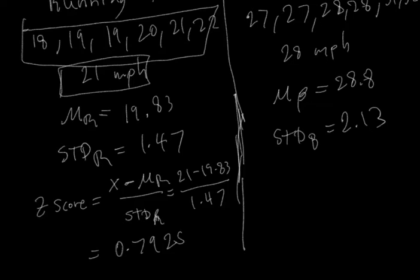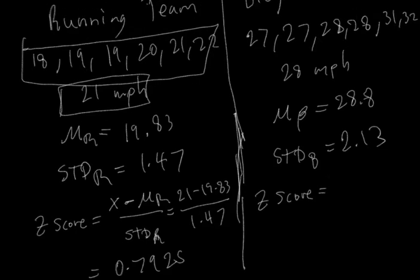So that's for the running team. If we compute the z-score for the bicycling team, we use the exact same formula.